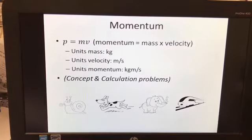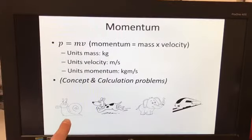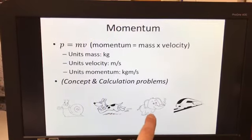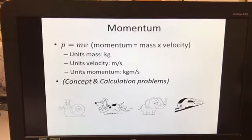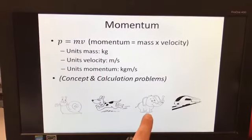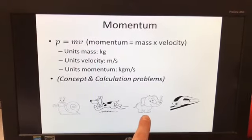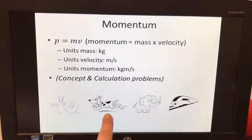All right, momentum. So compare the momentum of those objects: a slow-moving snail, a running dog, an elephant standing still, or a train going super fast, in order from least to greatest momentum. Least is the elephant because it's not moving. It has a momentum of zero. It has to be moving to have momentum. Then the snail, then the dog, then the train.